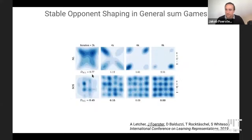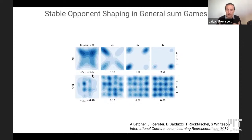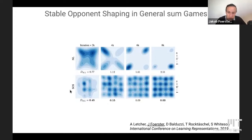We've extended this to stable opponent shaping, where rather than always shaping the opponent — which can lead to undesired equilibria — we require that when converging, the gradients are actually zero. If you do this, you can address things like GANs, where you can now stably learn a distribution of Gaussians, while naive learning collapses to a single mode in the distribution.